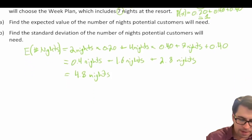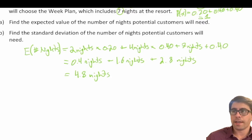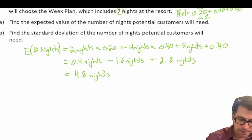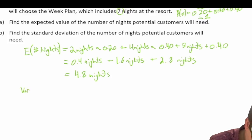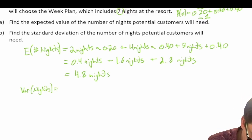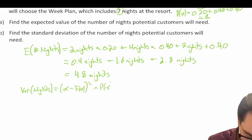From there we're asked to calculate the standard deviation, but before we get there we're going to calculate the variance first. The variance of nights is equal to the sum of the observed value of x minus the expected value of x, squared, times the probability that x occurs.